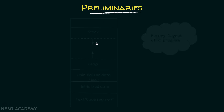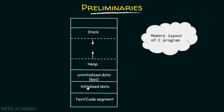Before diving into static scoping and dynamic scoping, we need to go through some preliminaries which are very important for us to understand. If you remember, this is the memory layout of a C program. I already talked about the memory layout of a C program in detail. If you haven't watched that lecture, I recommend you pause the video, watch that lecture first, then come back. The link is given in the description below.